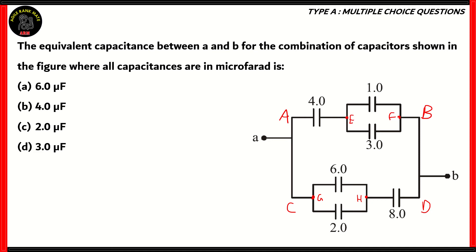The reason why we're doing that is so that we can find out the equivalent capacitances for some of the connections given. For that, we need to find out the two common points and how the combination of capacitors are calculated to find their equivalent capacitance.